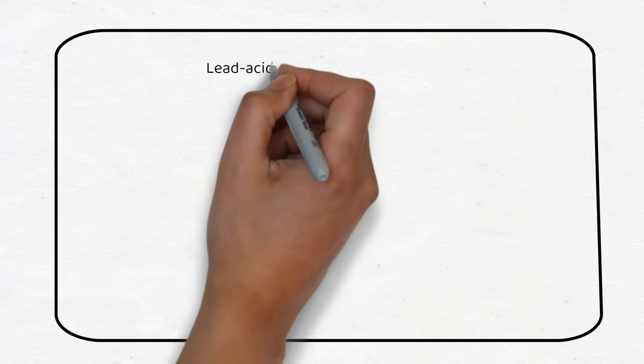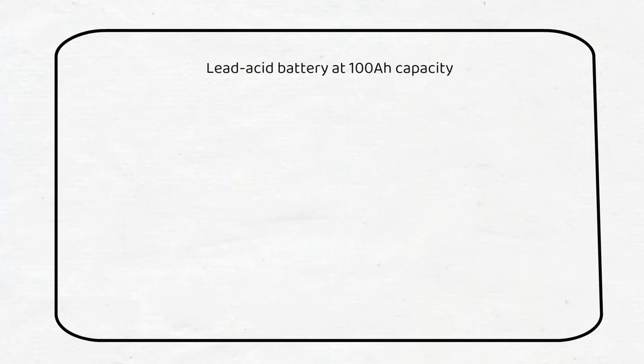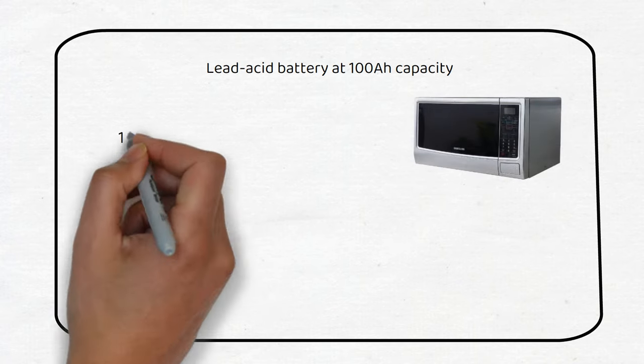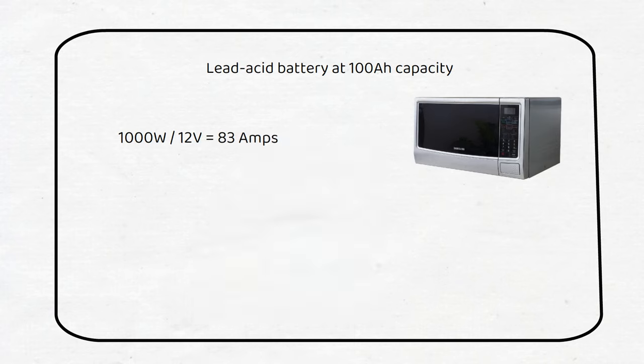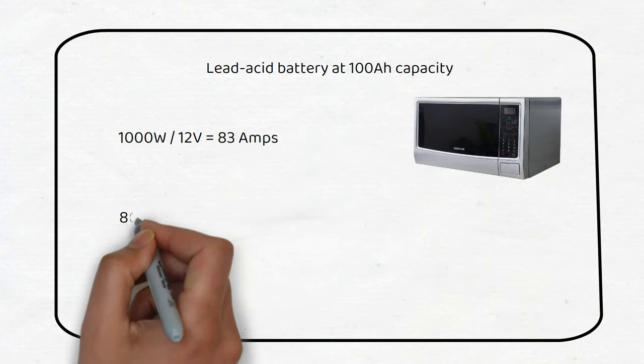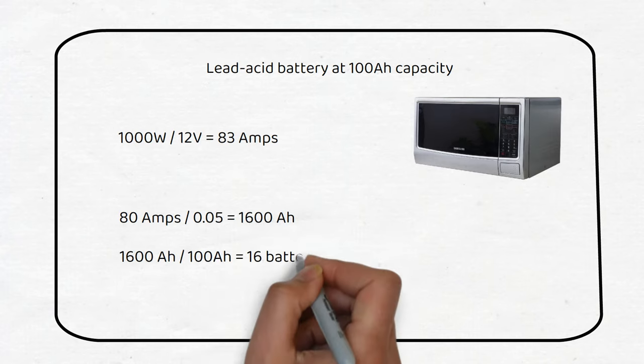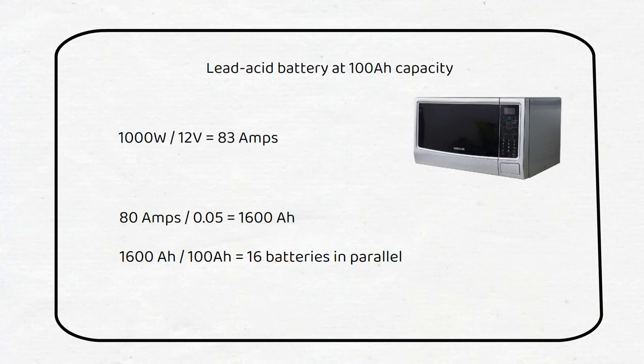If we have a lead acid battery of 100 amp hours, we can use the rated capacity at 0.05C or C20. So if we were to power a 1000 watt appliance through an inverter, we could draw 83 amps at 12 volts. Using the formula, we can see that we need 16 batteries to supply this 83 amps of current to achieve the rated battery capacity. Of course, we can use fewer batteries, but then the discharge current of each battery is higher.